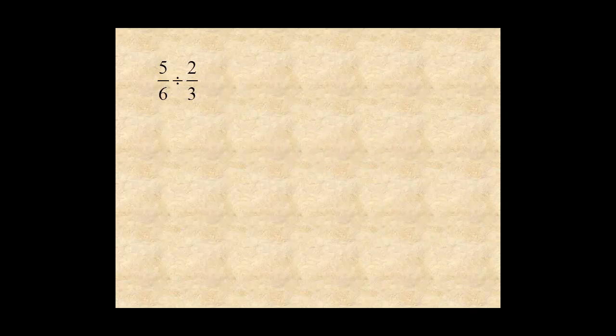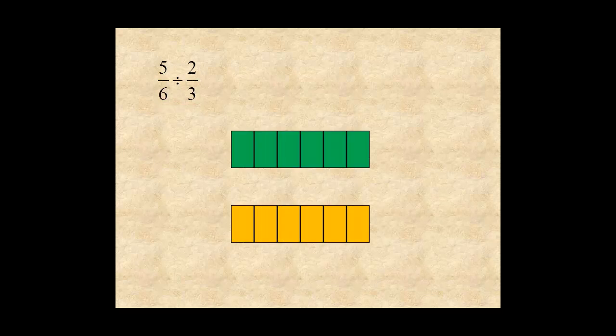Now let's try it with the problem we started with. Five sixths divided by two-thirds. Here are two whole units divided into six equal parts. In the first unit, five parts are shaded. So it represents five sixths.